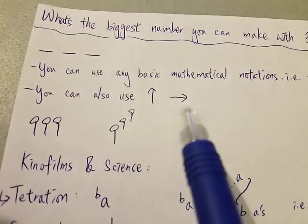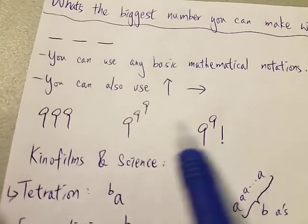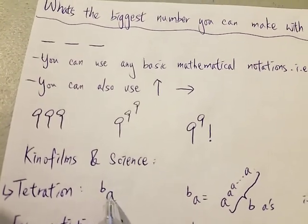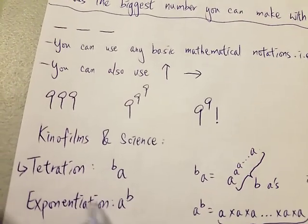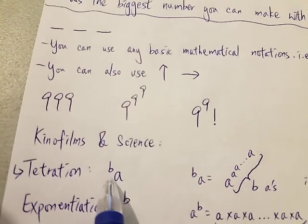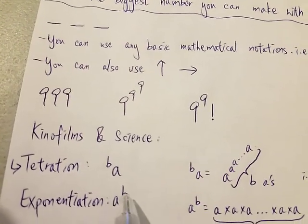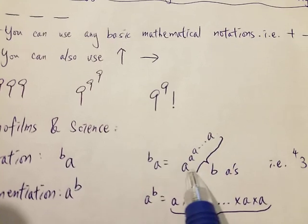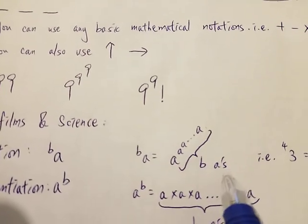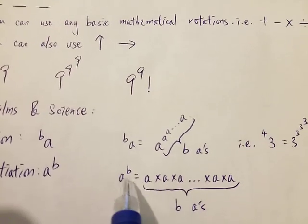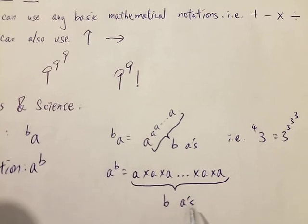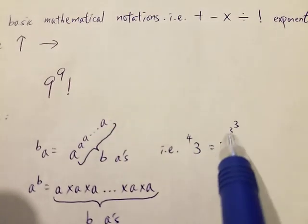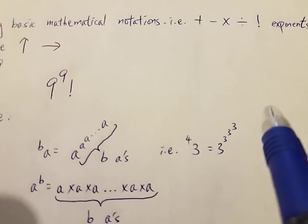Last time I totally forgot about tetration. We can write tetration in this form: a to the b. So instead of a to b like this for exponentiation, we write b on the left instead of on the right. So what does this mean? It just means a to the a to the a, and so on, with b copies of a. Similarly, for exponentiation a to b, it just means a times a times a with b copies of a. For example, 3 tetrated to the 4 means 3 to the 3 to the 3 to the 3 — there are four 3s in this power tower.